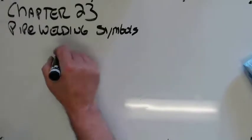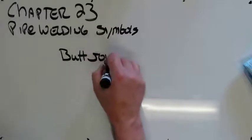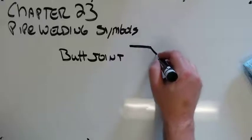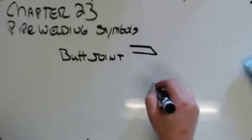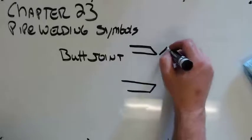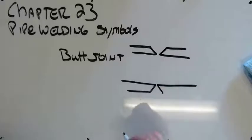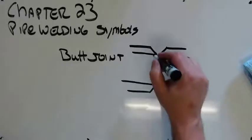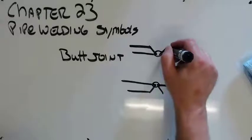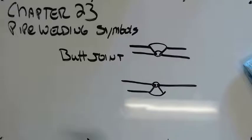So butt joints on pipe are just what we would think they'd be. You've got two beveled faces butting up to two more beveled faces. Pipe joint, right? You've got the root pass, your giant disgusting pipe fill or weave. That is a butt joint on pipe.